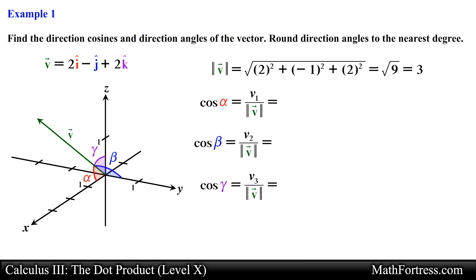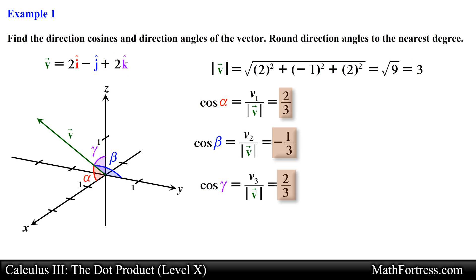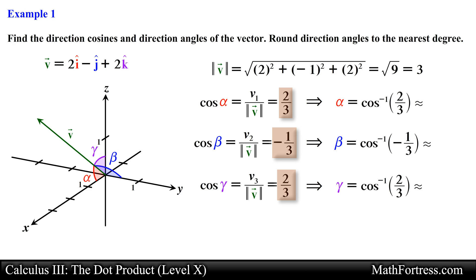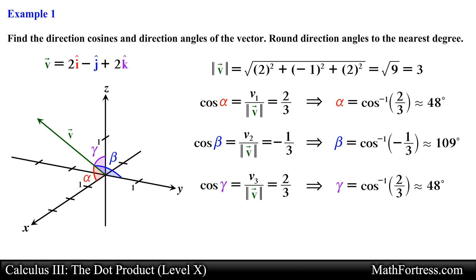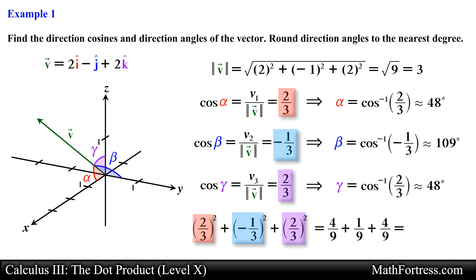Next, let's use the expressions that we derived earlier and substitute the components of vector v and the magnitude of vector v. Doing that, we obtain the following values for the direction cosines. From these expressions we can go ahead and find the direction angles by using inverse cosine. Evaluating the expressions and rounding to the nearest degree, we obtain the following values for the direction angles of vector v. These values represent the angle that vector v makes with the standard unit vectors. Also notice that the sum of the square of the direction cosines simplifies to 1, which is a quick way to verify that you have the correct direction cosines.